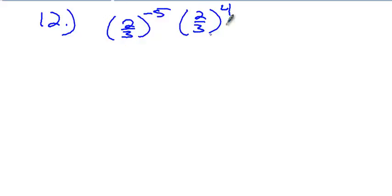So I have a base of two-thirds here, and what's the base here? Two-thirds. So if I have a repeated base being multiplied together, what can I do with the powers? Right, you add them.